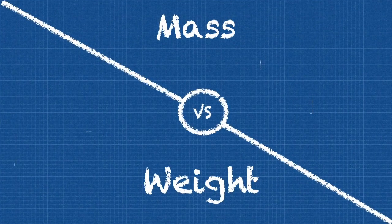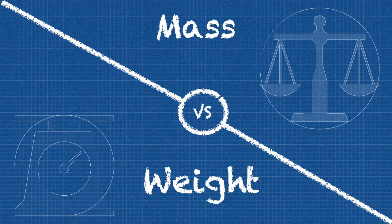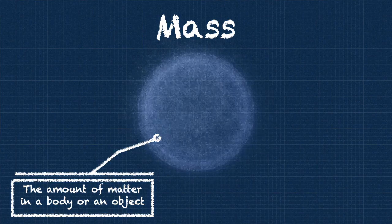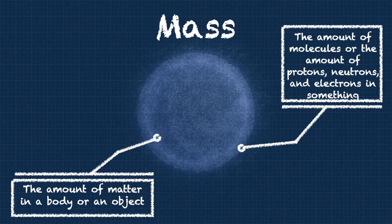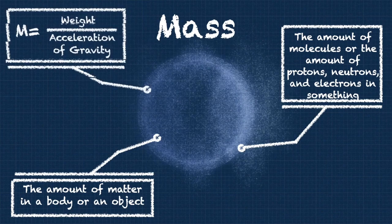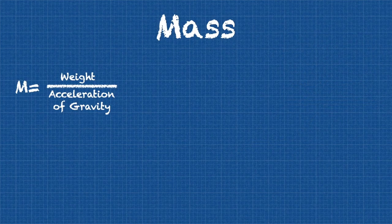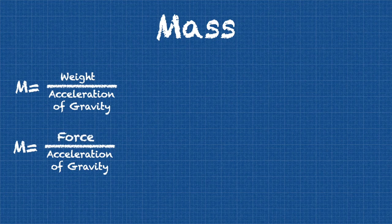First two characteristics are mass and weight. Mass and weight are commonly confused together. People often use them interchangeably, but they are not the same. They are two different concepts that share a relationship. Mass is the amount of matter in a body or an object. To be even more specific, it's the amount of molecules or the amount of protons, neutrons, and electrons in something. To find the mass of an object, just simply divide its weight by the acceleration of gravity. In this case, force and weight are equal.